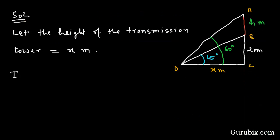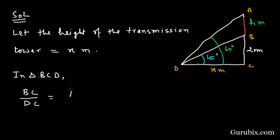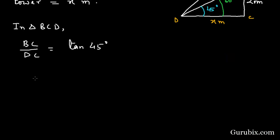Now we shall move to triangle BCD. In triangle BCD, we find the ratio of BC and DC. That is tan 45° equals BC over DC. DC is 20, and this equals 1 over 1, therefore x equals 20 meters.